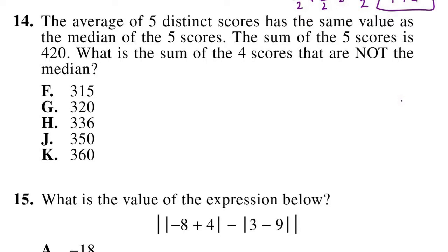Number 14. The average of 5 distinct scores has the same value as the median of the 5 scores. The sum of the 5 scores is 420. What is the sum of the 4 scores that are not the median? So we know that the average of the scores has the same value as the median. So let's find the average of the scores. We know that we have 420 for the sum. We divide that by 5, our total number of terms, and we get 84. So now we know that our median, it's the same as our average, so our median is 84. Now we want to know what the sum of the 4 scores that are not the median is. So we know the sum including the median is 420. And now we know our median, so we just subtract that from 420. So 420 minus 84, that's 336. So that is the sum of our 4 scores that are not the median. And that is our option H.